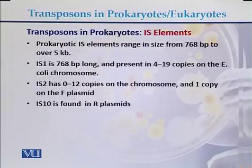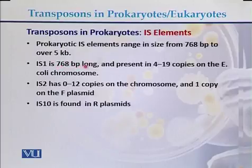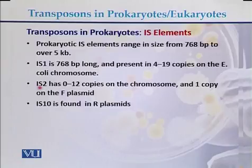What are IS elements? Prokaryotic IS elements range in size from 768 base pairs up to 5 KB. For example, IS1 is 768 base pairs long and present in 4 to 19 copies in the E. coli chromosome. IS2 has 0 to 12 copies, and IS10 is found in R plasmids.